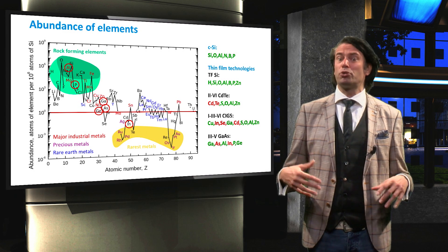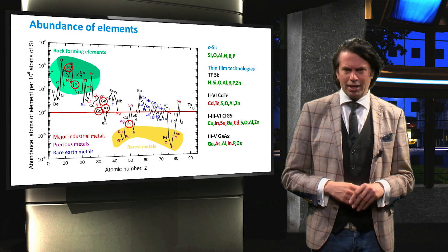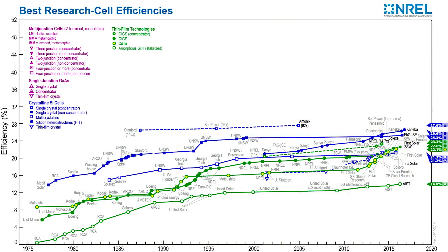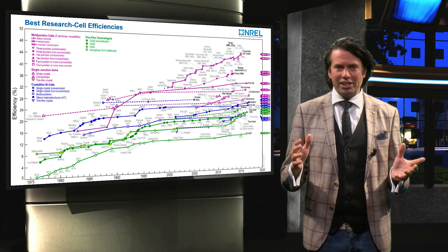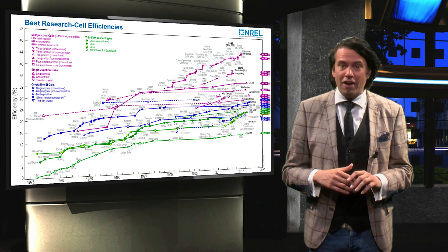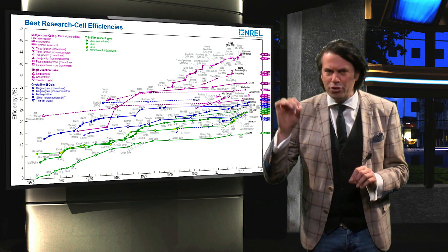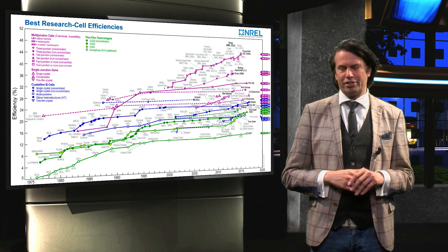So why do researchers still pursue these III-V technologies? Let's take a look at the record efficiencies. Of all the thin film technologies, the III-V technology results in the highest conversion efficiencies under both AM1.5 standard test conditions and concentrated sun conditions. The current record solar cell by Fraunhofer ISE has a conversion efficiency of 46%. Consequently, the expensive high-performance III-V PV technology is mainly used in space applications and concentrator photovoltaics.